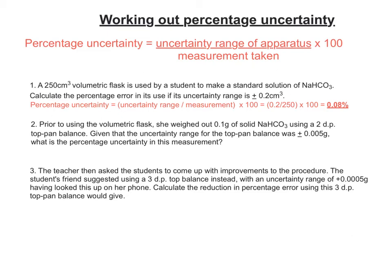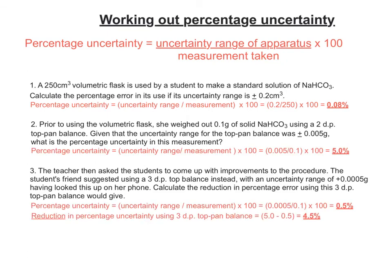Did you get that first one as 0.08%? I made a slight adjustment to the third one — it's plus or minus 0.0005 grams — so just quickly double-check before you've written that down. We can now try the second and the third one. You can see quite clearly the massive improvement in percentage uncertainty from using the three decimal place top pan balance.